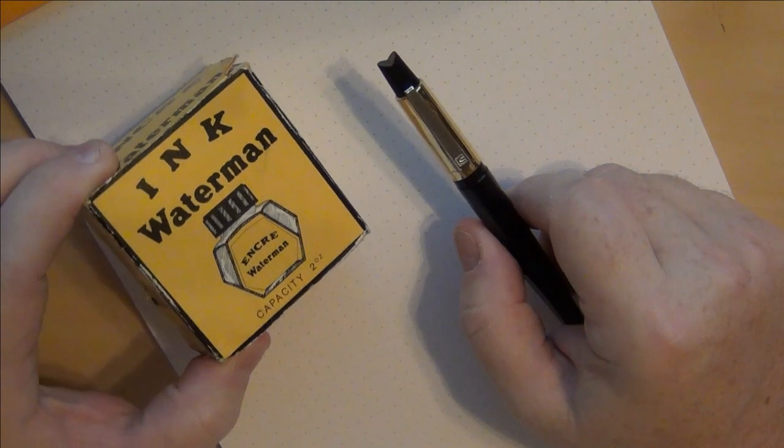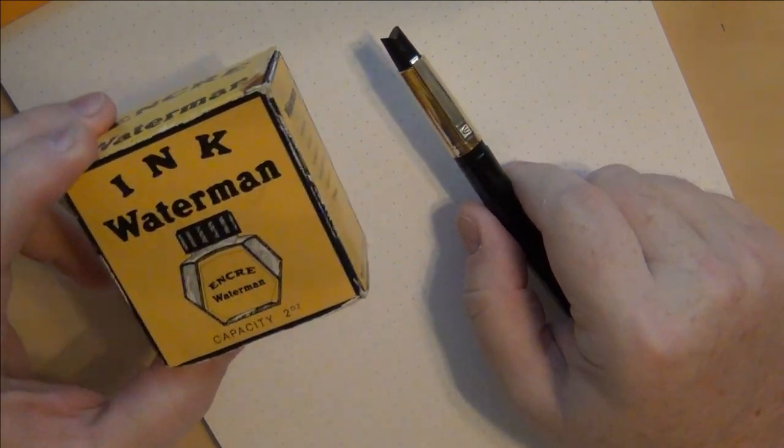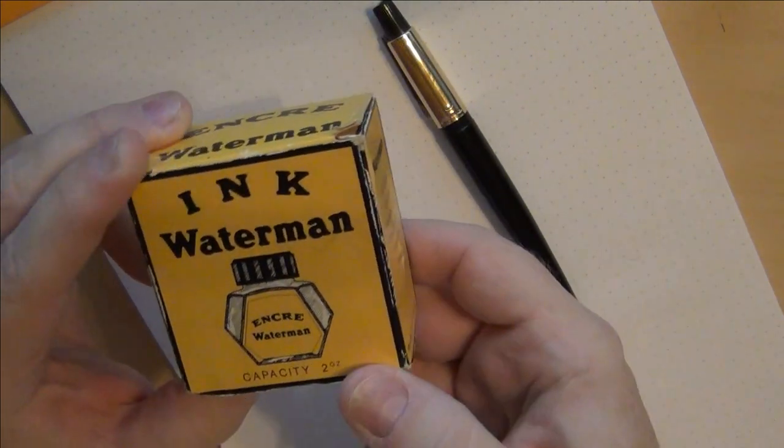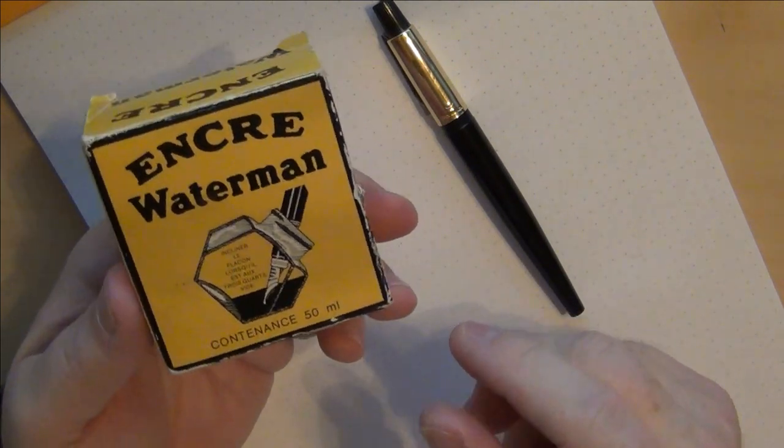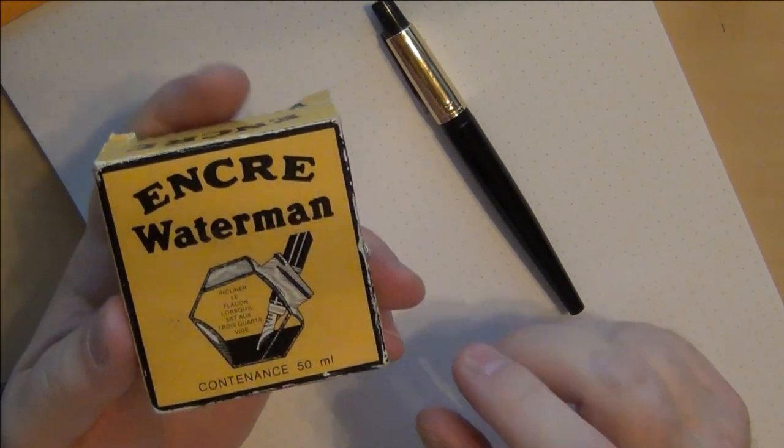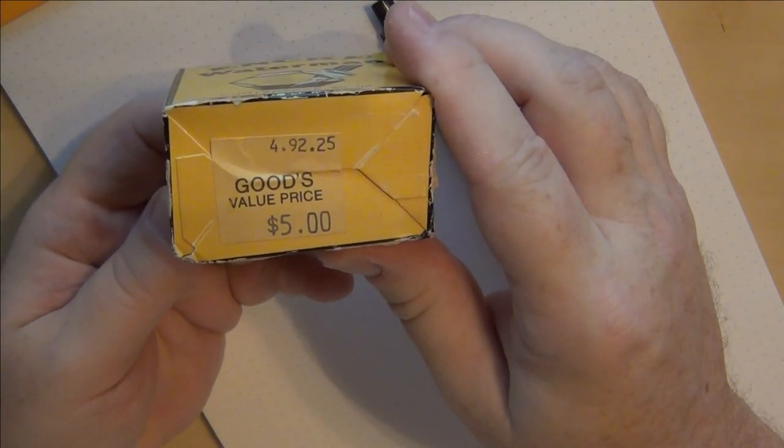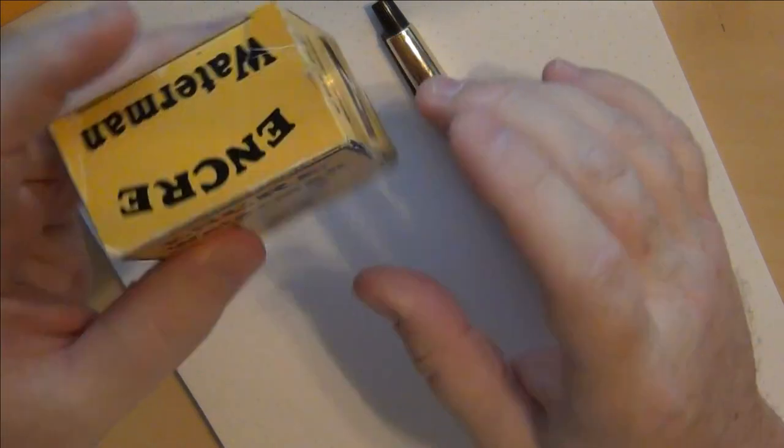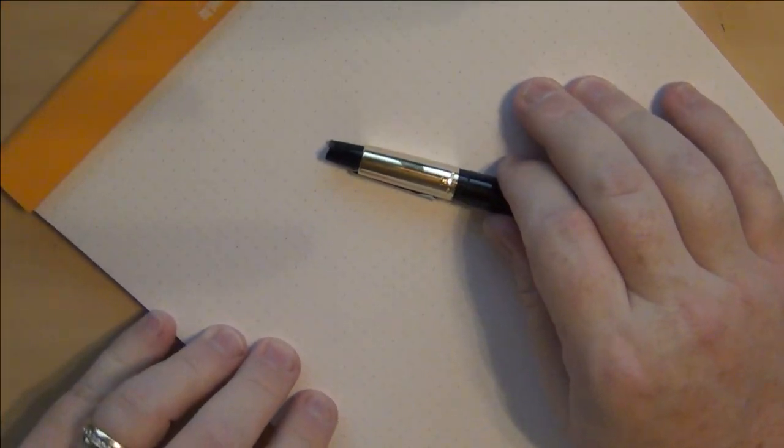What I decided to do was, because I showed you that I used a converter instead of one of their cartridges, I went ahead and filled it with some old Waterman black ink. I picked up a bottle of this a little while ago. I enjoy Waterman ink, and you can see right here, probably somewhere around 1992, this bottle was purchased for $5. I've got that laying around, and I went ahead and filled this pen with it.